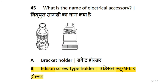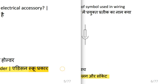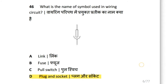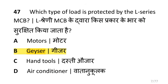What is the name of this electrical accessory? Edison screw type holder. What is the name of the symbol used in the wiring circuit? That is plug and socket. Which type of load is protected by the L series MCB? That is geyser.